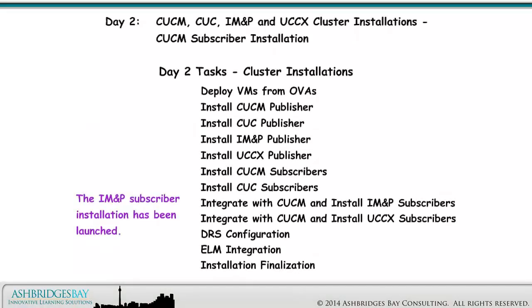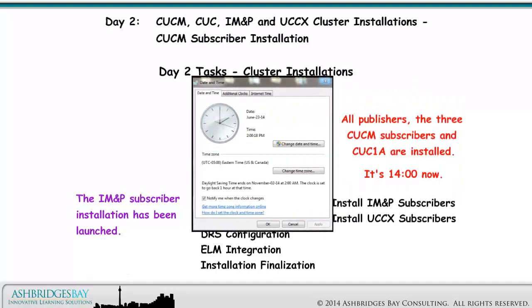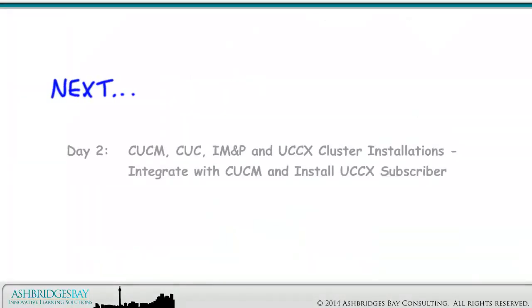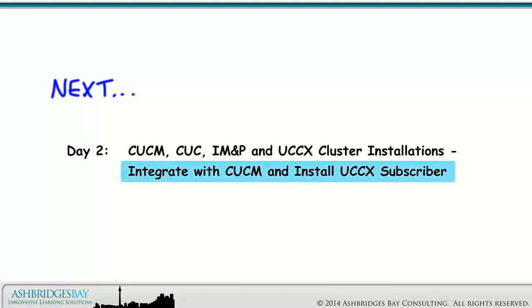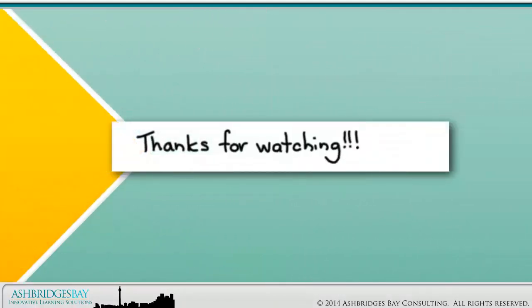The IMP1B subscriber installation has been launched. All publishers, the three CUCM subscribers, and CUC1A are installed. It's 1400 hours now. Next, install the UCCX subscriber. Coming up next: CUCM, CUC, IMP, and UCCX cluster installations — integrating with CUCM and installing the UCCX subscriber. Thanks for watching!